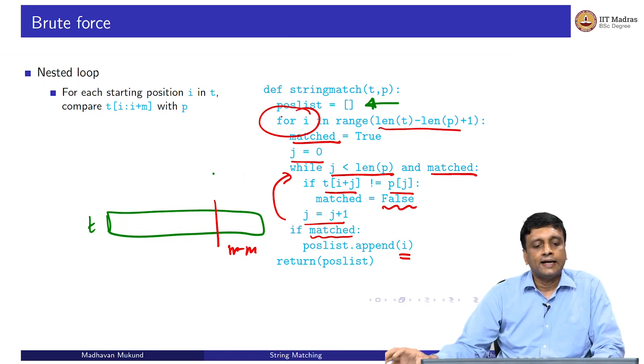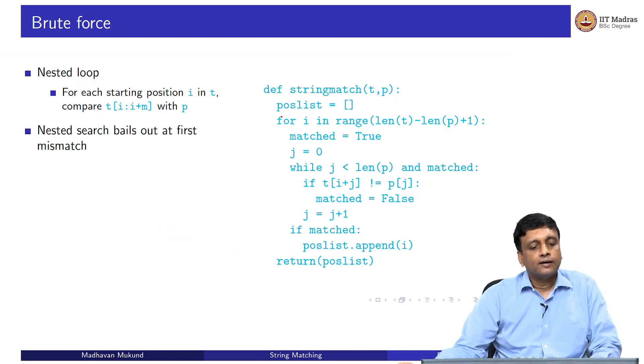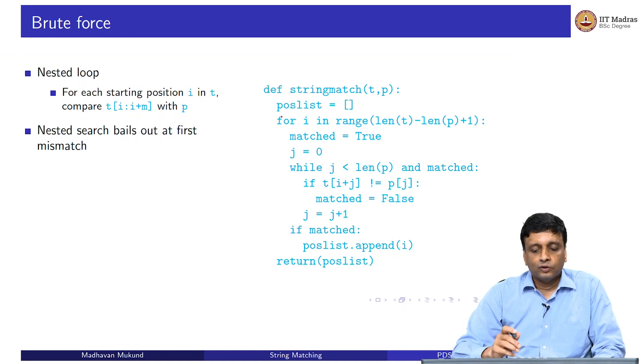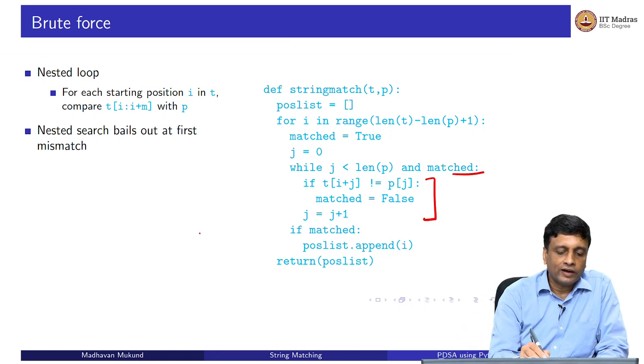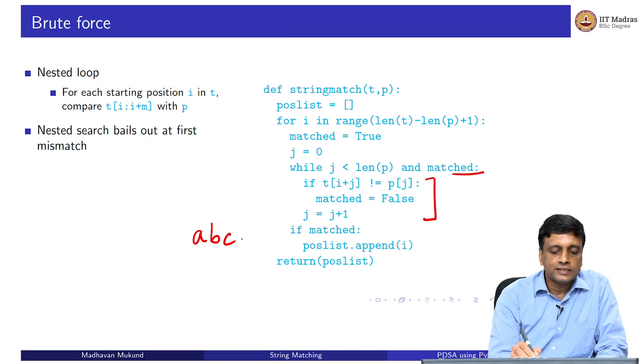This is a very natural left to right scan, position by position. The only optimization we have done is that we have made sure that we come out of each slice as soon as we can. Whenever we find a mismatch, this while loop will exit. In particular, if I have a text which looks like A, B, C, D, E, and my pattern looks like X, Y, then the moment I look at A, B, I will say that A does not match X, and I will quit.